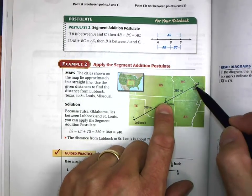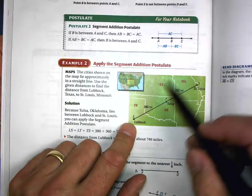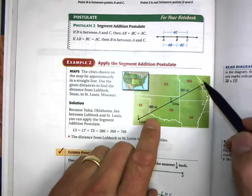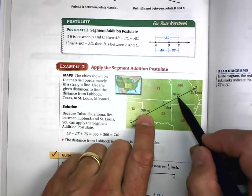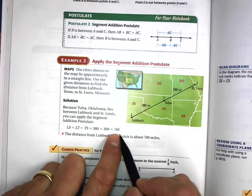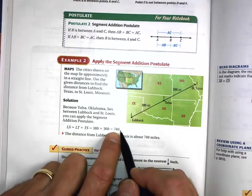If I know it's 380 miles from Lubbock to Tulsa and 360 miles from Tulsa to St. Louis, how would I figure out how long it is from Lubbock to St. Louis? Just add the two together: 380 plus 360, which gives us 740. That's right.